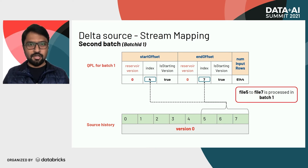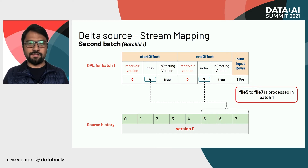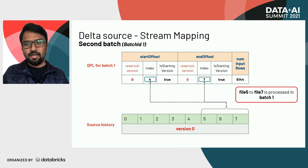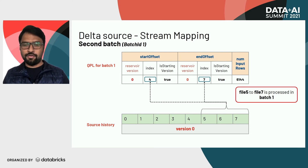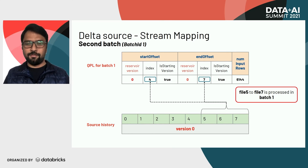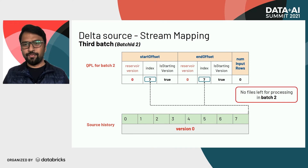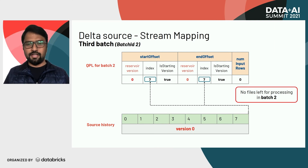In micro batch ID one, the start offset now matches the end offset of the previous batch — reservoir version zero, index four. The end offset shows index seven, which represents files five, six, and seven of your source data table. You might wonder why we're only processing three files when maxFilesPerTrigger is five — that's because only three files remain to be processed, so Spark just pulls all existing files. In the third batch, both start offset and end offset have the same values — reservoir zero, index seven, isStartingVersion true — and number of input rows is zero, because all existing source data has been processed.